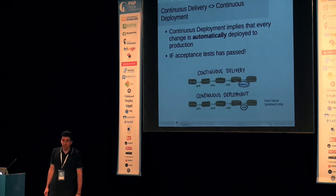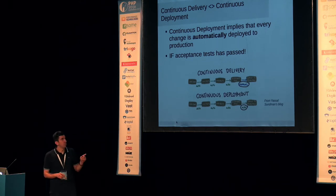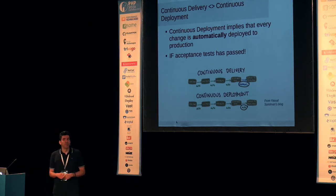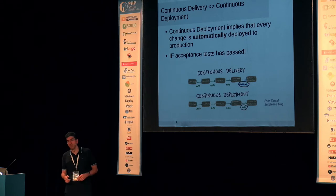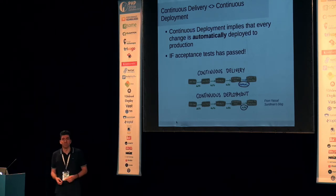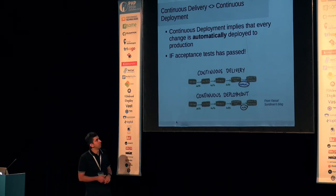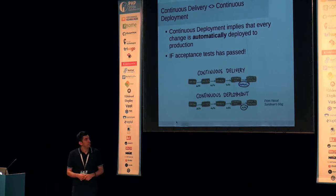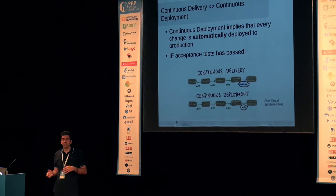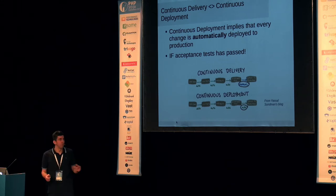Let's see what continuous deployment is. Basically, continuous deployment is based on continuous delivery, but instead of that button I mentioned — where you click a button and it's deployed — you have a situation where changes are automatically deployed to production. But there is a big if: if the acceptance tests have passed. You can skip the acceptance tests, but then it will not automatically go to production — it will lead to some type of disaster. Keep that in mind. The key point is that only the last step is different. You should always be aware that continuous deployment cannot exist without continuous delivery — it's just an extension. The same as continuous delivery cannot exist without continuous integration.